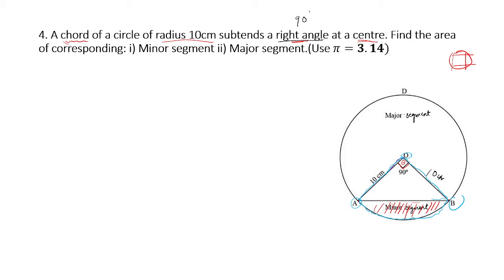Let's write the solution. The radius is given as 10 cm and theta is 90 degrees. The triangle we have is AOB. Since OA and OB are both radii of 10 cm and the angle at O is 90 degrees, this is a right angle triangle where AB is the hypotenuse, OB is the base, and OA is the height.